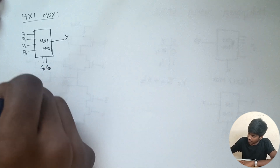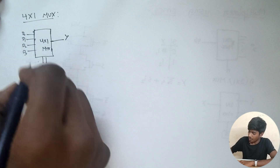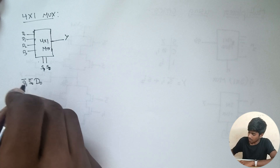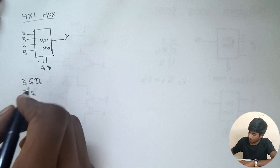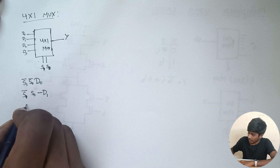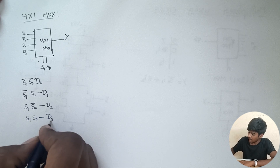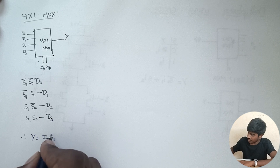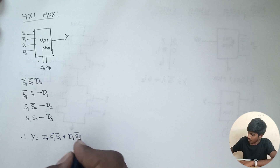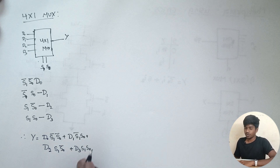For S1 bar S0 bar, we have output D0. For S1 bar S0, output is D1. For S1 S0 bar, output is D2. For S1 S0, output is D3. Therefore y equals D0 S1 bar S0 bar plus D1 S1 bar S0 plus D2 S1 S0 bar plus D3 S1 S0. This is the Boolean expression.